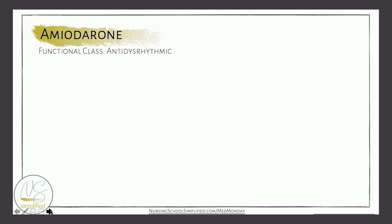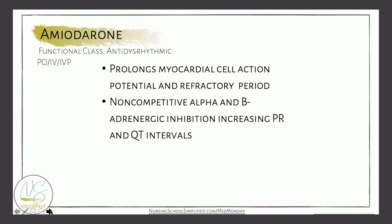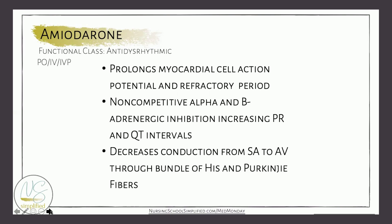Its functional class is an anti-dysrhythmic. It can be given PO, IV, or IV push. It prolongs the myocardial cell action potential and refractory period. It's non-competitive alpha and beta-adrenergic inhibiting, increasing PR and QT intervals. And it decreases conduction from the SA to the AV node through the bundle of His and the Purkinje fibers.